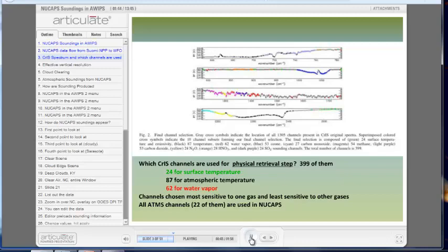When a set of soundings is being produced, regression is done first with all NuCAPS data to get temperature and moisture profiles. These data are used to do cloud clearing.